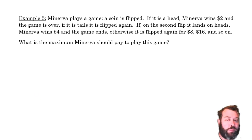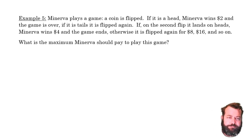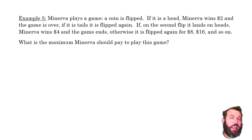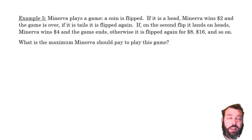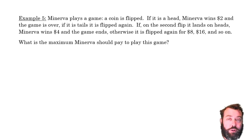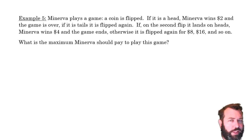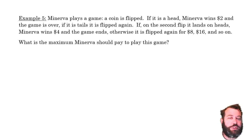Here's our fifth and last example — a tricky one. Minerva plays a game. Flip a coin: if it lands on heads on the first attempt, Minerva wins $2 and the game ends. If it's a tail, flip again — the prize money doubles. If heads on the second attempt, she wins $4. Tails then tails, then heads on the third attempt wins $8, then $16, and so on. As it goes along, the prize money goes up but the probability of that occurring is diminishing. So what is the maximum Minerva should pay to play this game?